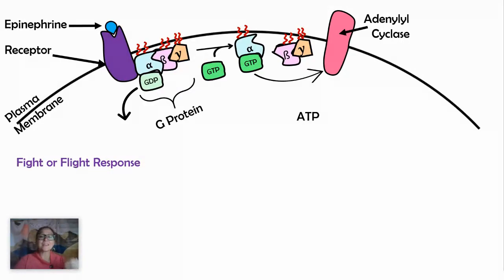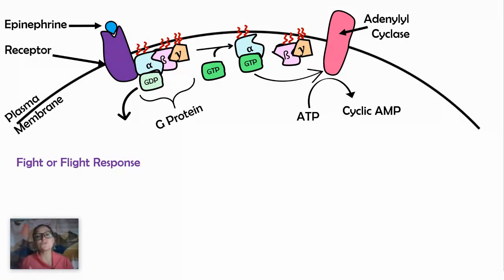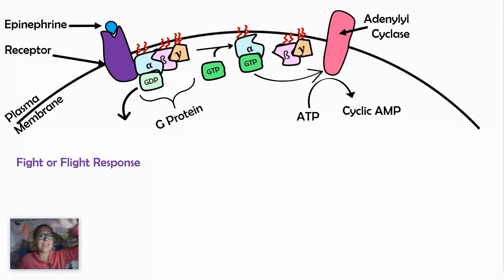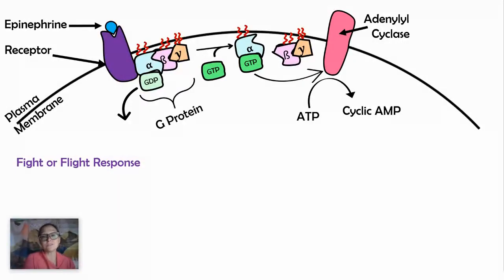Once adenylyl cyclase is active, it can take ATP and convert it into cyclic AMP, which is our second messenger. These signal transduction pathways oftentimes rely on the second messenger or proteins within the cell to relay signals. Epinephrine itself is trapped on the outside of the cell because it's protein-based and can't enter by diffusion. Therefore, it needs help on the inside to relay that message, and that's where proteins come into play — G proteins, kinases, enzymes, transcription factors, all working together in a series of events to bring about a cell response.